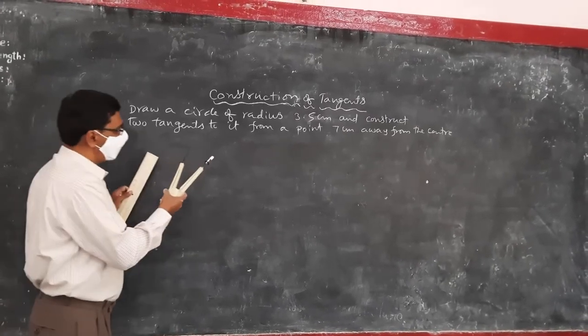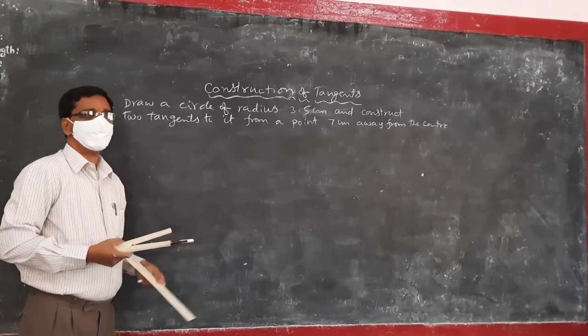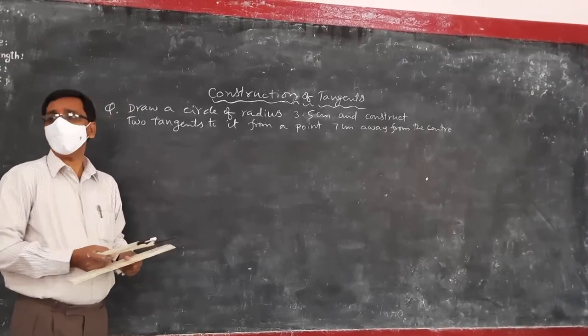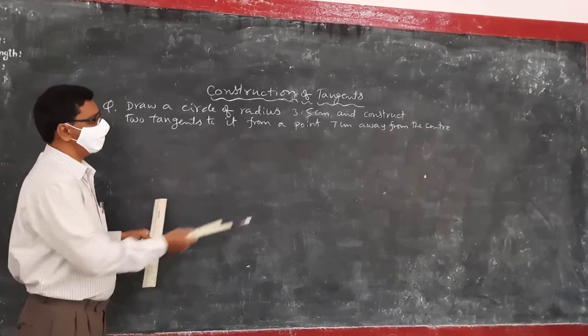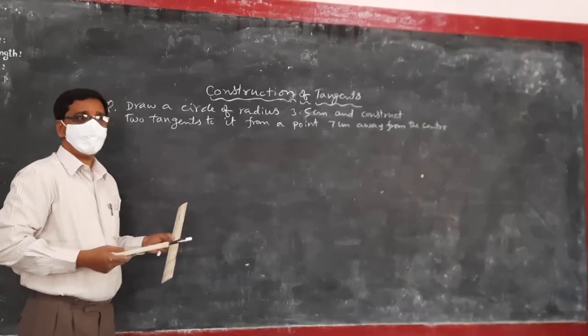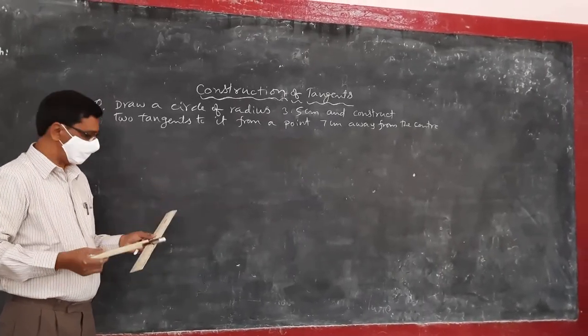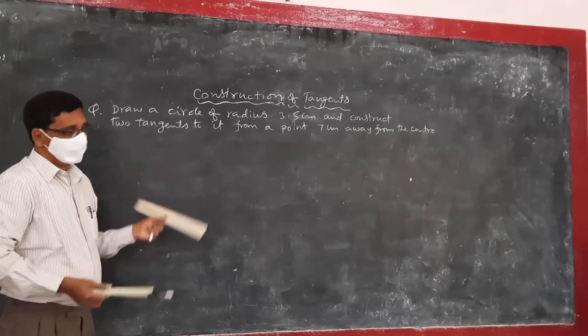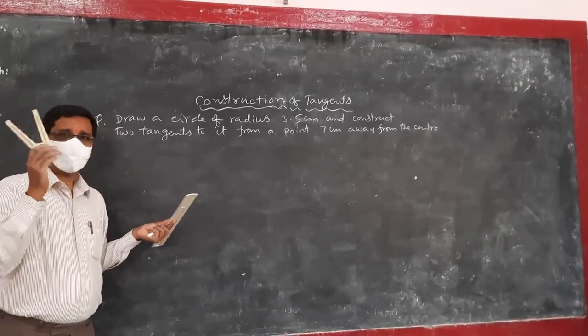That is a simple example question. The measurements can be changed. Sometimes 5 cm, sometimes 8 cm. So whatever is the number, the basic construction goes like this. There is a scale, pencil and you need a compass. That's all.